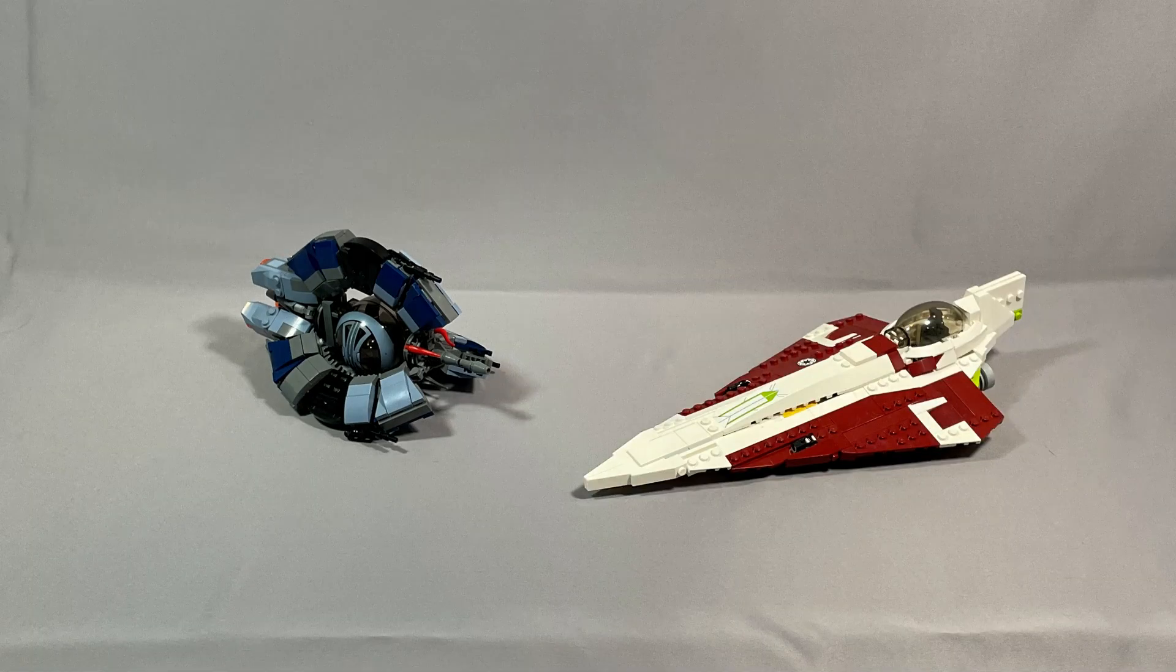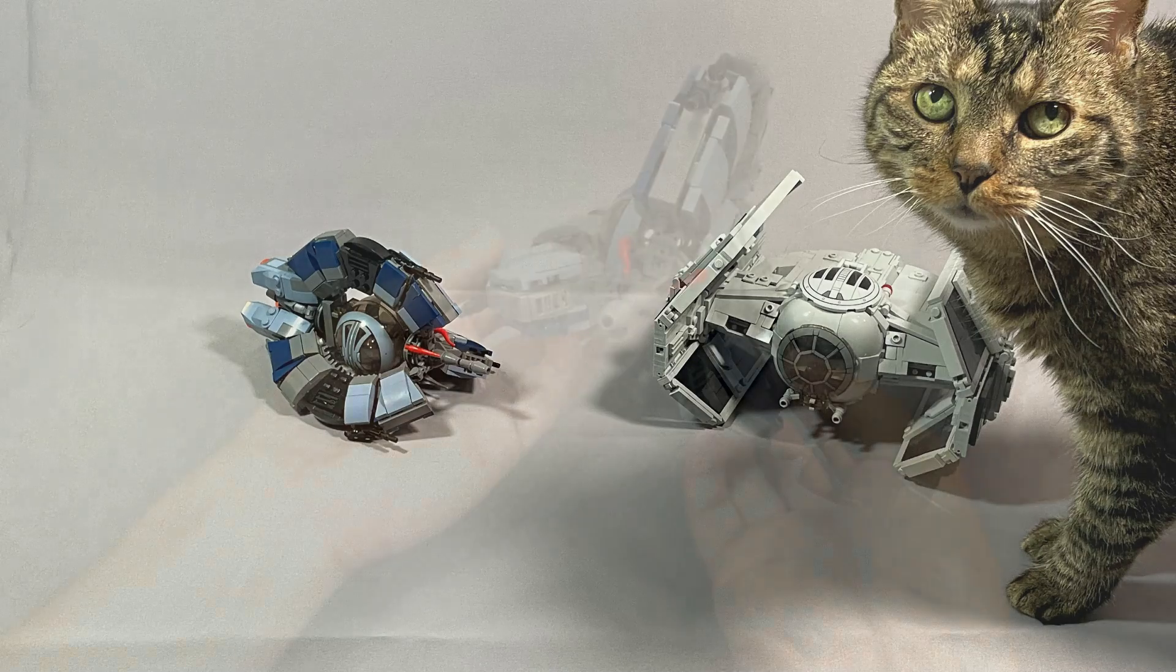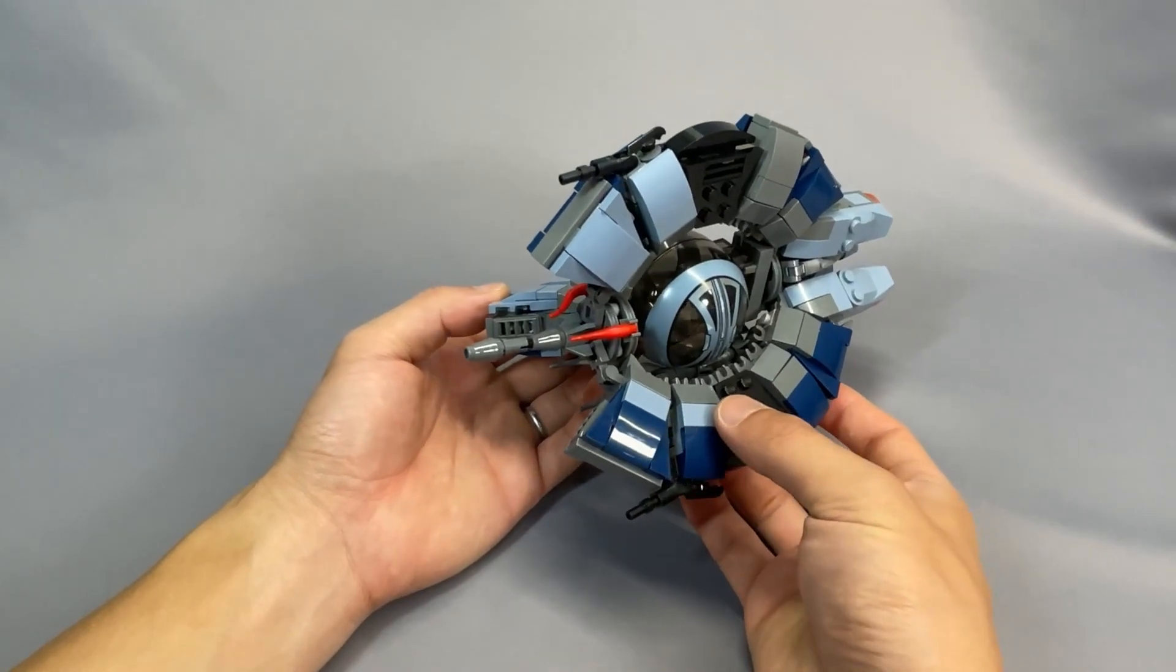I don't build many CIS models, and this one's going to look very good on the shelf, until I need a bunch of 1x1, 1x2 inverted brackets in dark bluish gray, of which there are like 26 of them. Anyway.